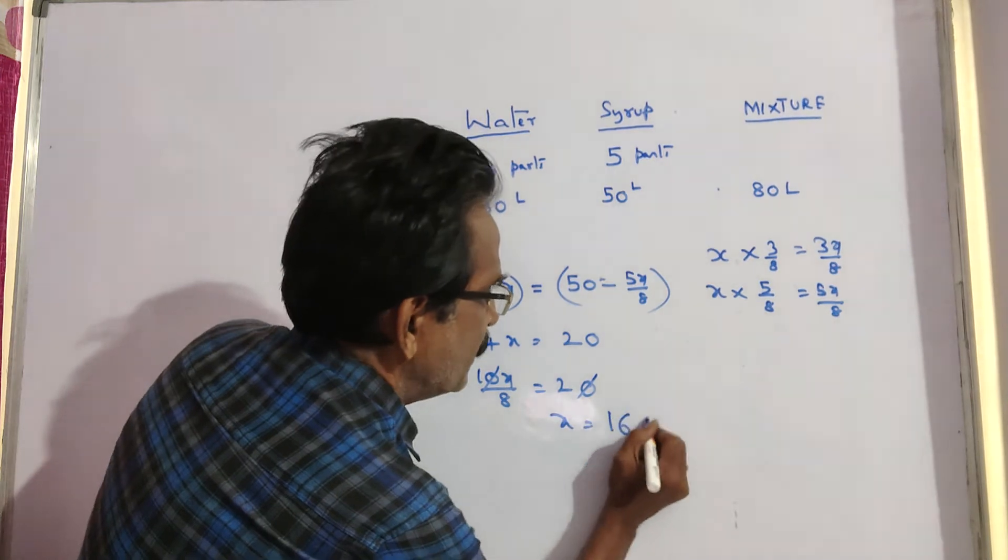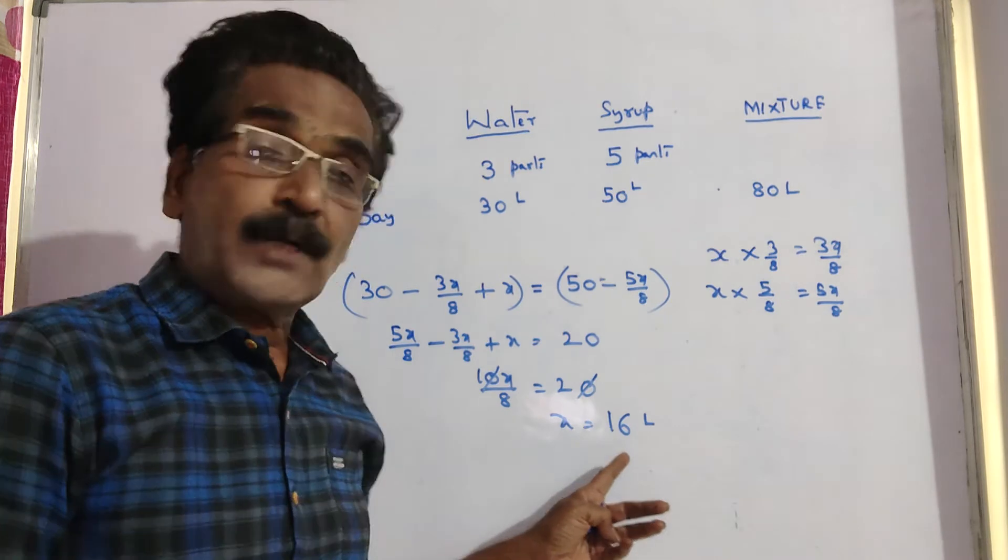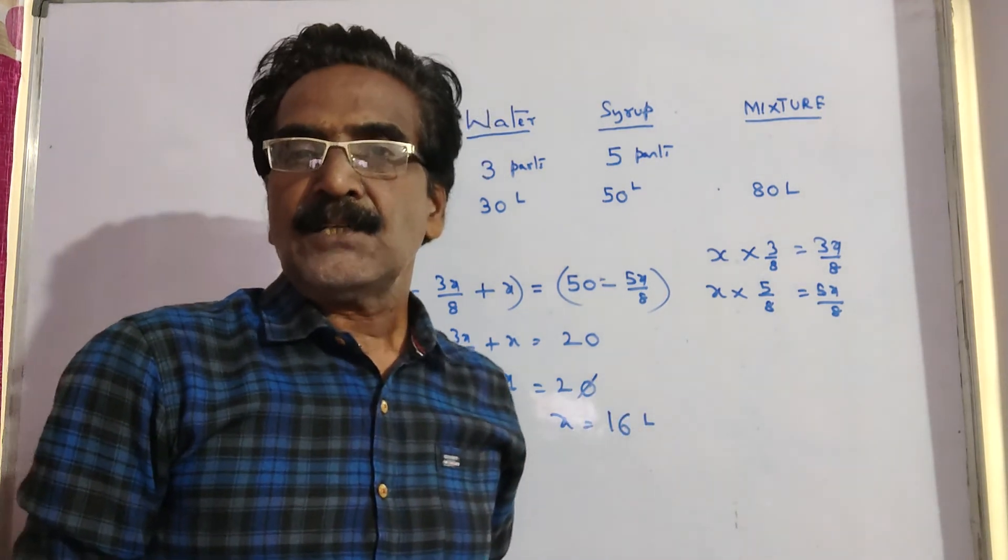x is equal to 16 liters. So, if the total mixture is 80 liters, we have to draw 16 liters.